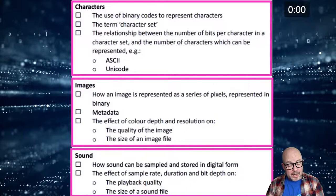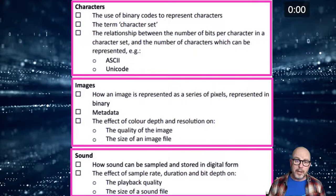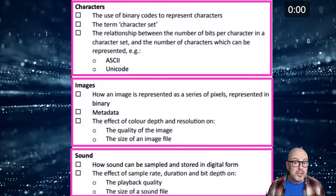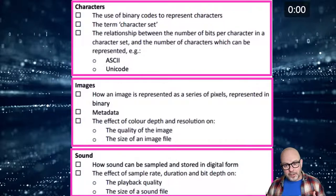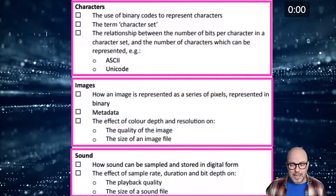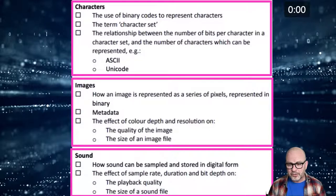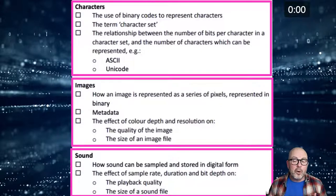Let's look at characters first. This notion of binary cuts across all of this - everything on a computer is represented in binary. The CPU can only deal with machine code, and machine code is binary, consisting of data and instructions. So whatever a processor has to do, it's going to be in binary - whether it's images, characters, or sound. Every character has a binary code; B will be one more than A, and C will be one more than B. We'll look at character sets: ASCII and Unicode.